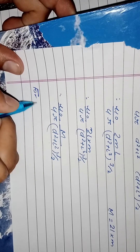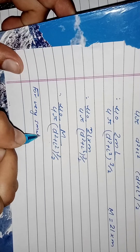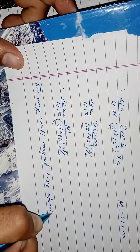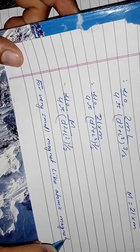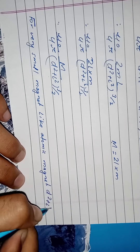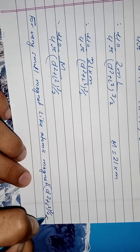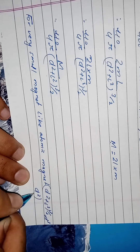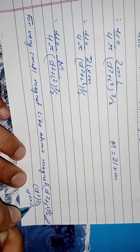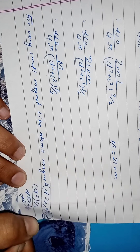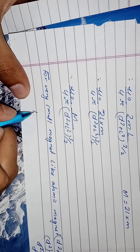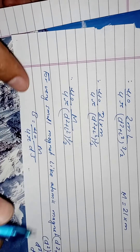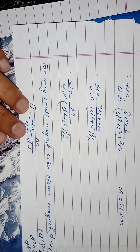For a very small magnet — like an atomic magnet — where d >> L, L approaches zero, so d² + L² ≈ d², and (d² + L²)^(3/2) ≈ d³. Therefore, the simplified expression becomes B = μ₀/4π × M/d³. This is the required expression for the magnetic field intensity on the equatorial line of a bar magnet.